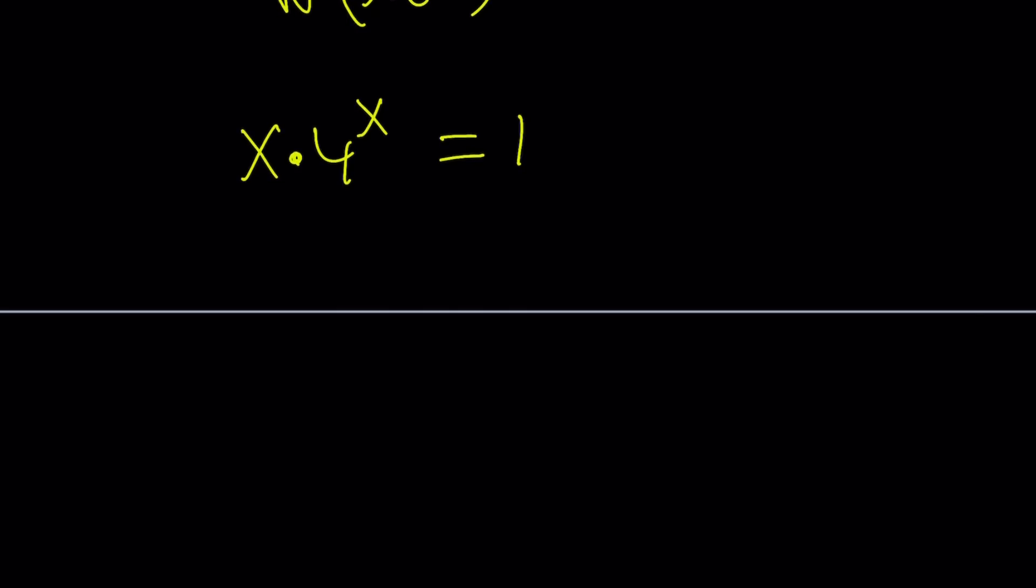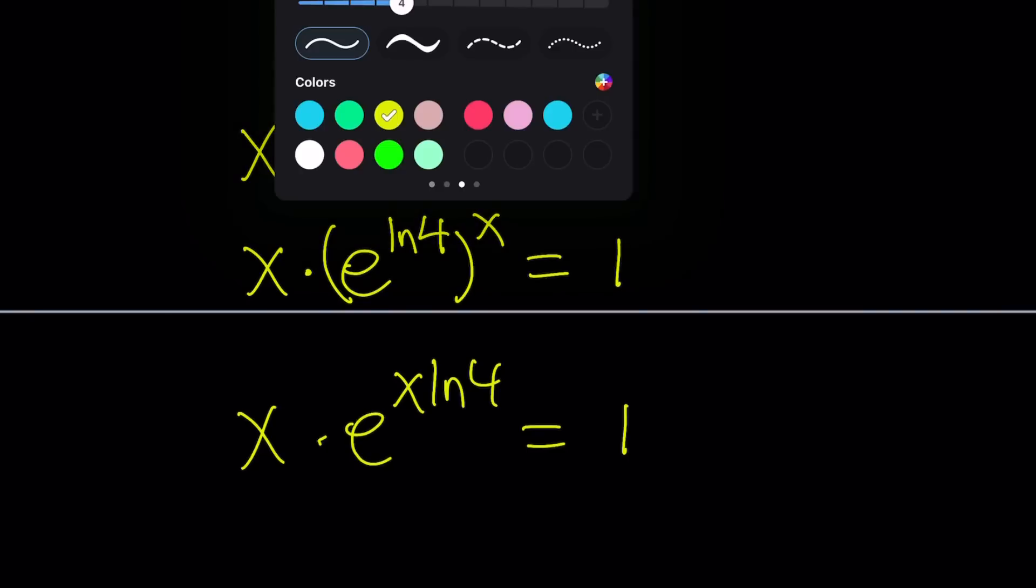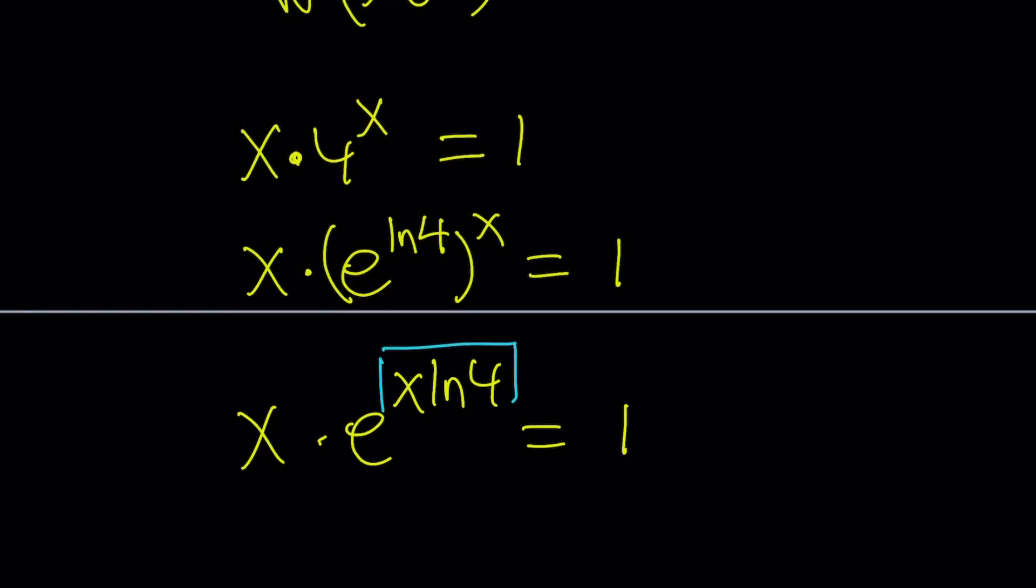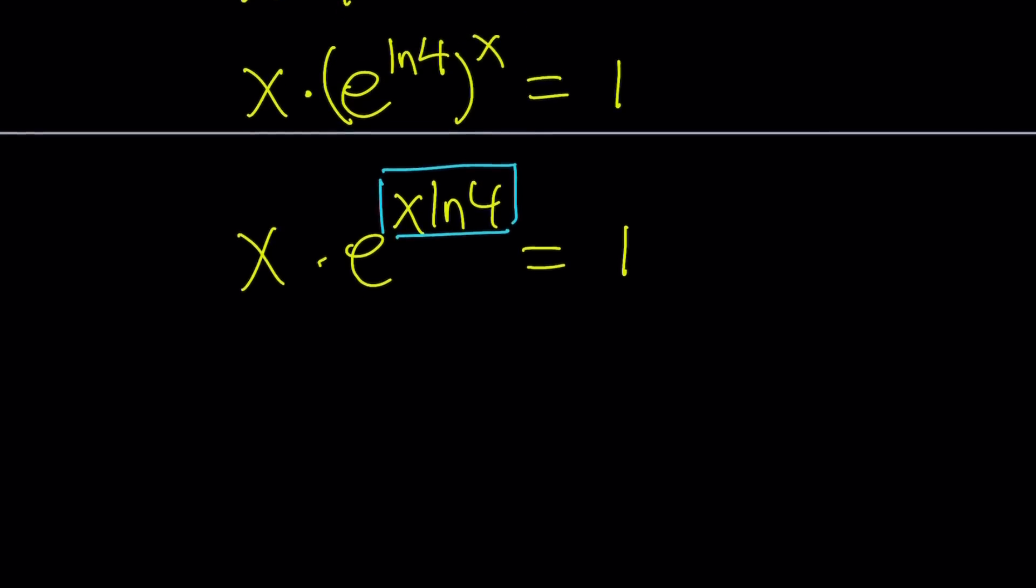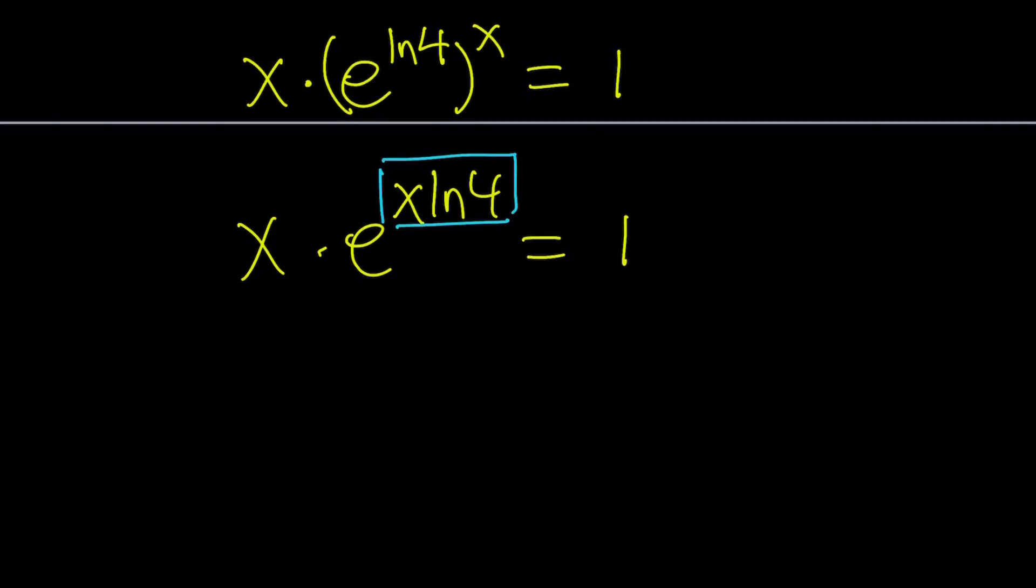So, here's what I'm going to do. I'm going to replace the 4 with E to the power ln4 because that's what it is, right? And then raise it to the power X. We're almost there. And then I'm going to multiply the exponents. X times E to the power X ln4 equals 1. Now, I don't have X times E to the X, but I have X times E to the power something else. Since I can't change the power, I can change X very easily, right? How? Multiply both sides by ln4 and you'll get it.